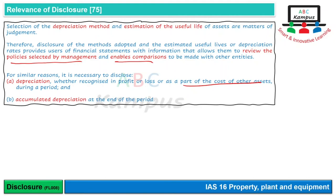For example, agar asset 100 million ka hai aur accumulated depreciation sirf 10 million hai, to it shows ke ye asset abhi new hai. Iske muqabile mein agar asset ki cost 15 million hai aur accumulated depreciation 10 million hai, to size mein chhota hai lekin apni life ka ek bada hissa poora kar chuka hai — 15 mein se 10 ki accumulated depreciation hai.